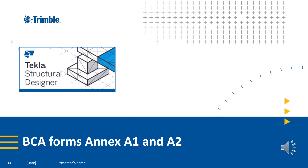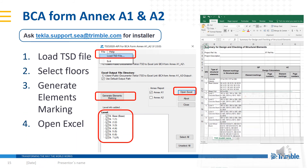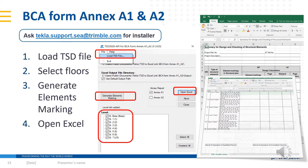The last thing we want to talk about is the BCA forms for Annex A1 and A2. Please request the installer from our technical support team. This application is very easy to use — all you need to do is follow four steps. First, load the Tecla Structural Designer file. Second, select the floors you would like to create the form for. And third, hit the Generate button.